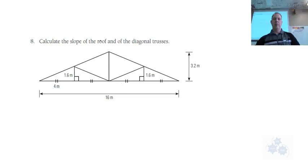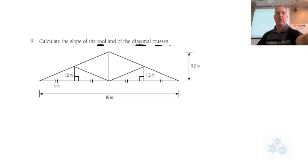So with number 8 it says calculate the slope of the roof and the diagonal trusses. So the roof is the outside part, right? That's the roof.